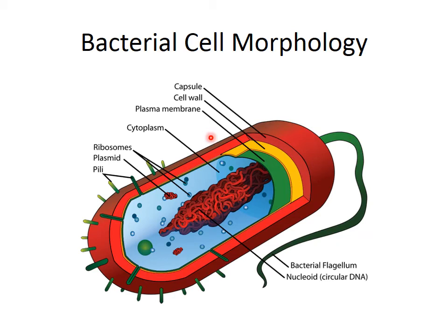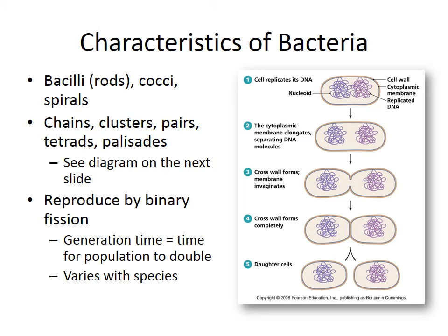The inside of the cell is full of cytoplasm, just like in any cell. We've got ribosomes, plasmids, pili — those are like little hairs on the surface of the bacteria — and a nucleoid, which is circular DNA not encased in a membrane. Certain bacteria will also have a flagellum, which helps them move around.